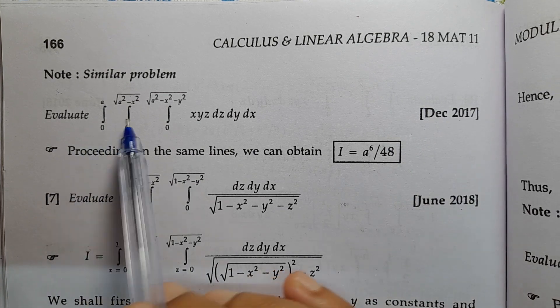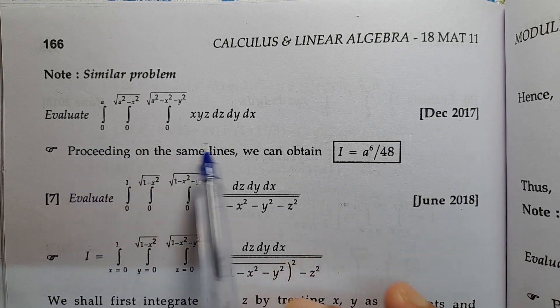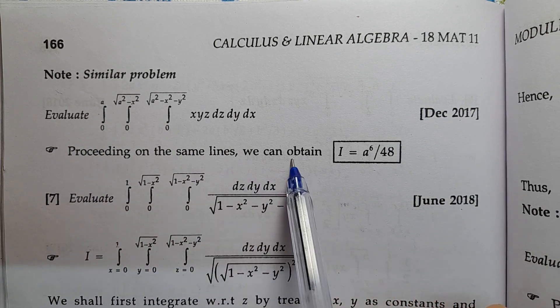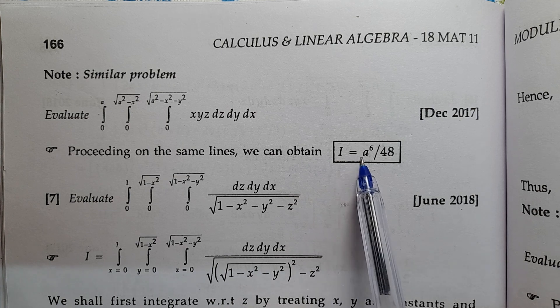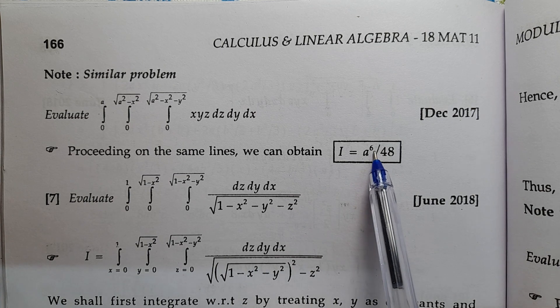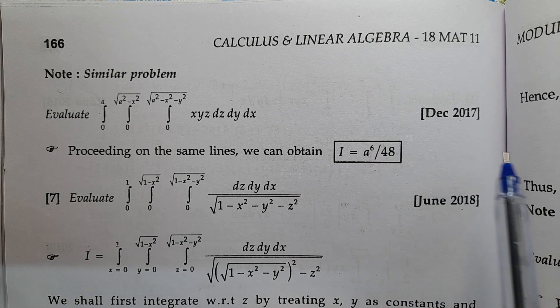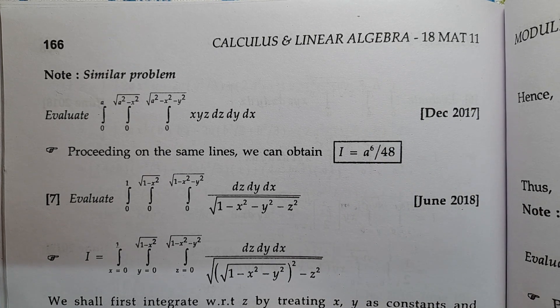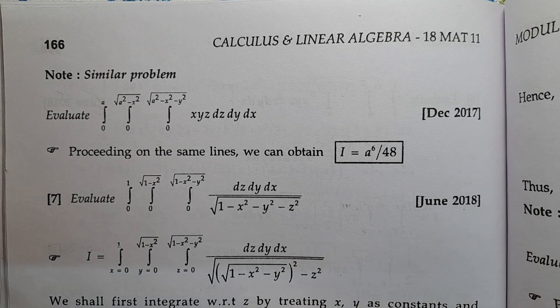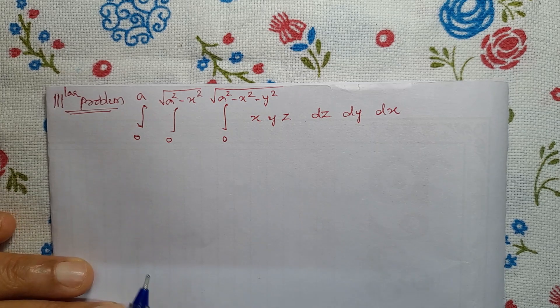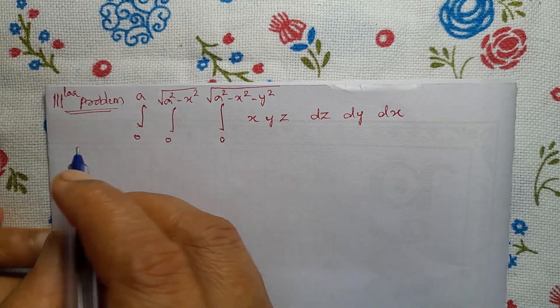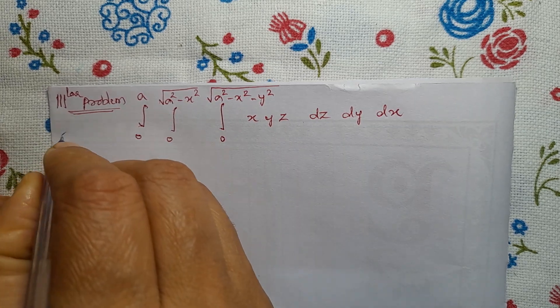Proceeding on the same lines, we can obtain I equal to A to the power of 6 divided by 48 as the answer. We will check the solution for this problem.